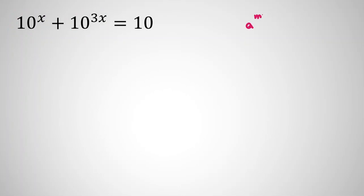By power rule, we can say if you have a to the mn, you can write it as a to the m to the n. If you apply this for 10 to the 3x, the first one is 10 to the x, so the next one is 10 to the x cubed equals 10.